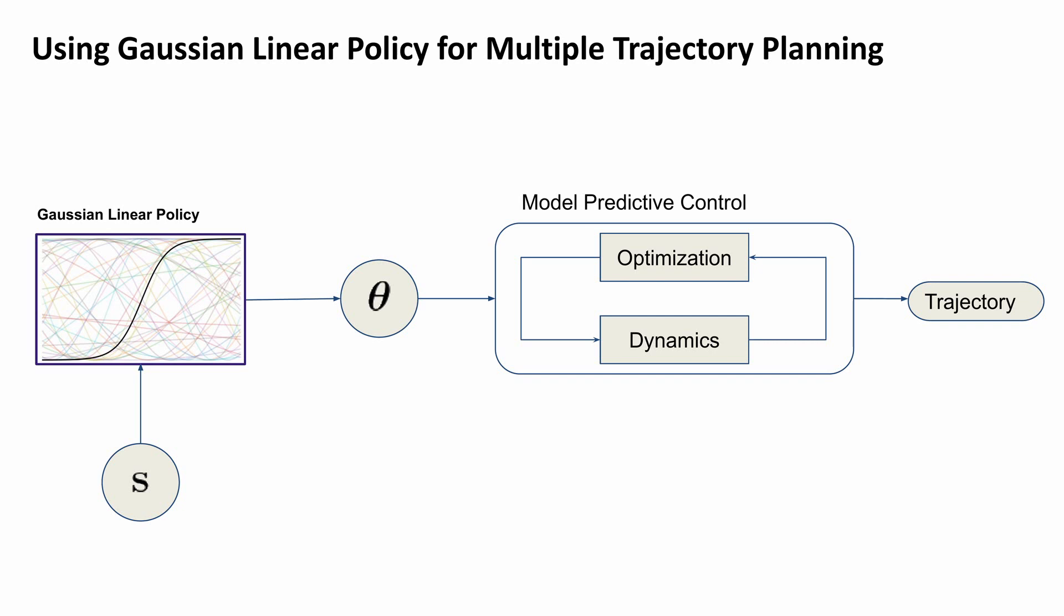Second, we address the problem of adapting the decision variables for the model predictive control under different contexts. This is referred to as contextual policy search.